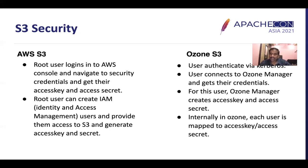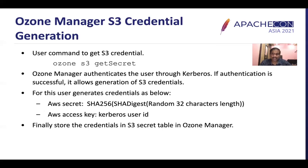The user authenticates via Ozone Manager, connects to it, and gets credentials. Ozone Manager creates an access key and access secret for this user. Internally, the user is mapped to an access key and secret. To generate S3 credentials, the user runs the command 'ozone s3 getsecret' and authenticates via Kerberos. If authentication is successful, Ozone Manager allows generation of S3 credentials. The AWS access key is the Kerberos user ID or Kerberos principal name. The AWS secret is a digest of a random 32-character-length string. This information is stored in the Ozone Manager RocksDB in the S3 secret table.